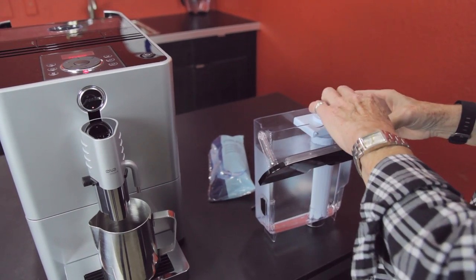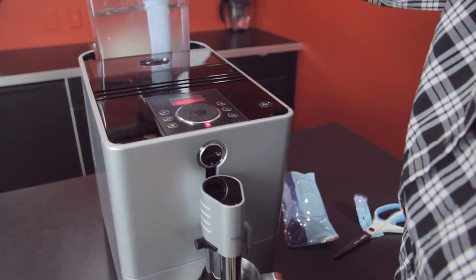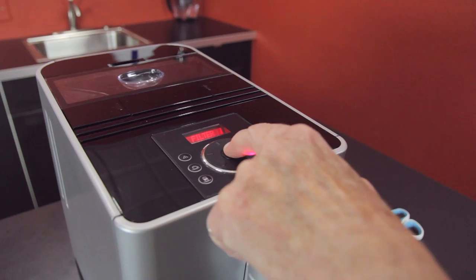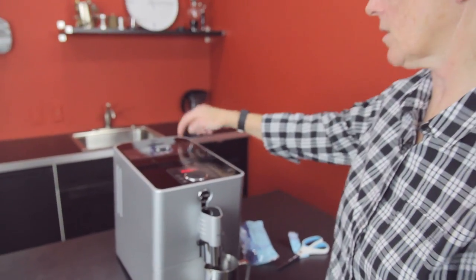Put the lid back on. Clicks. Put the water tank back in. And what it's going to do is it's going to go through a rinse mode. It's going to automatically rinse the water filter. It's a charcoal water filter.